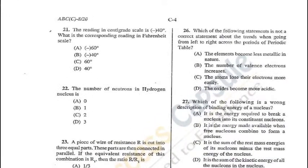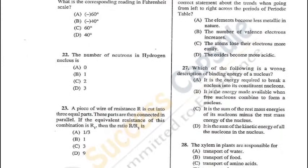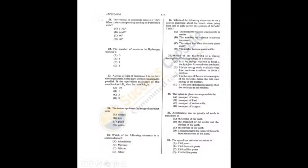Question 21: The reading in the centigrade scale is −40°. The corresponding reading in the Fahrenheit scale is also −40 — B is the correct answer. Question 22: The number of neutrons in a hydrogen nucleus is zero — hydrogen has no neutron — A is the correct answer.